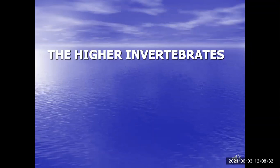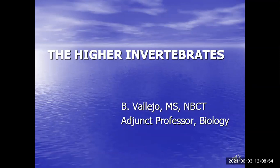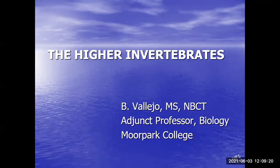Tonight we're going to talk about the higher invertebrates. Last time we covered the primitive invertebrates. We defined an animal as something that is eukaryotic, multicellular, heterotrophic, moves from place to place, exhibits some type of symmetry, and has some type of sexual reproduction in its life cycle. We went from the simplest to the most complex, looking at the Porifera, cnidarians, flatworms, and nematodes. So here's where we are now with the higher invertebrates.